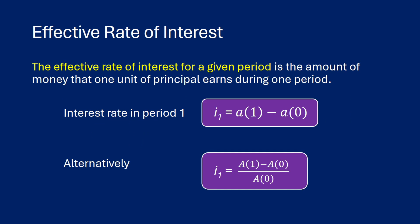So the effective rate of interest for a given period is the amount of money that one unit of principal earns during one period. So you can think about it as, let's say, we want to find the interest rate in period one. Well, we're basically taking our accumulation function at time one and subtracting the accumulation function at time zero in order to get a difference.